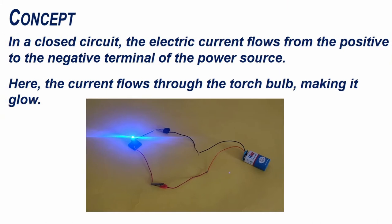In a closed circuit, the electric current flows from the positive to the negative terminal of the power source. Here, the current flows through the torch bulb, making it glow.